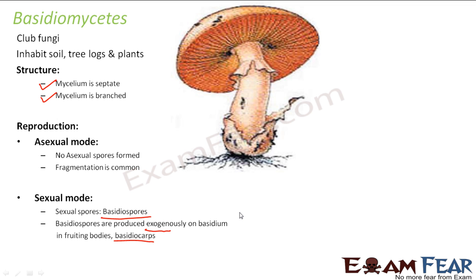If you observe a real mushroom, look at the portion under its cap. You will see small black hair-like structures that look similar to the gills of fishes. These are nothing but compact hyphae very close to each other, on which besidia are formed. That is why we say that the club-shaped terminal part contains the reproductive structure in Basidiomycetes.